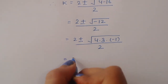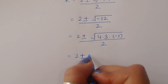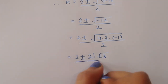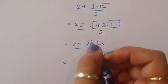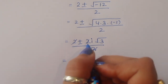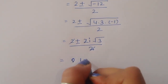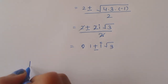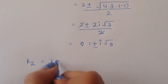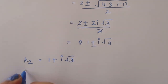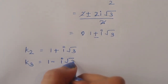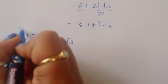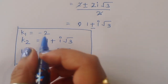Simplifying the square root of minus 12: this becomes square root of 4 times minus 1 times 3, giving 2i square root of 3. So k equals 2 plus or minus 2i square root of 3, divided by 2. Cancelling the 2, we get k equals 1 plus or minus i square root of 3. So from Case 1: k₁ equals minus 2, k₂ equals 1 plus i square root of 3, k₃ equals 1 minus i square root of 3.